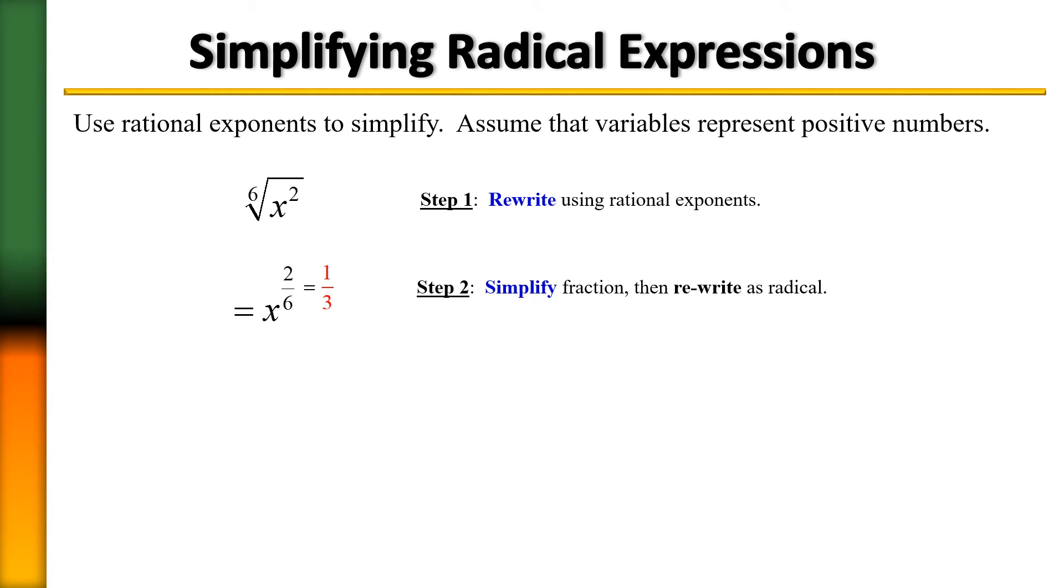Let's now turn it back into a radical. So turning it back into a radical, underneath the radical symbol, I'm going to have x. What kind of root? Cube root. Because we have a 3 here. And so it's just simply the cube root of x. We're done.